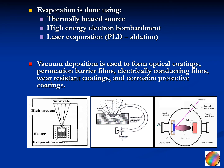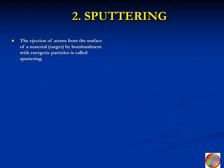Vacuum deposition is used to form optical coatings, permeation barrier films, electrically conducting films, wear resistant coatings, and corrosion protective coatings. These three techniques are broadly called PVD techniques, which stands for physical vapor deposition. The second vapor technique, which is very important and widely used, is the sputtering technique.